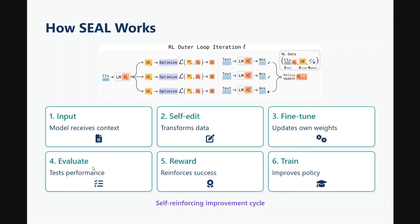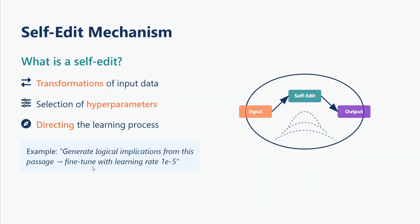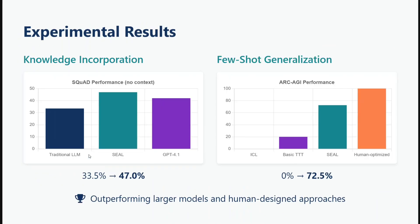The self-edit mechanism is the most important part. A self-edit comprises transformations of the input data — rephrasing the data, generating question-answer pairs, and also generating hyperparameter values. So self-edit includes both the dataset and the hyperparameters, as well as the direction of the learning process. For example: 'generate logical implications from this passage' or 'fine-tune with learning rate 1e-5.' The rephrased data alongside the parameters are all generated before fine-tuning begins.